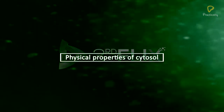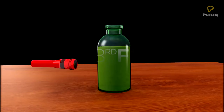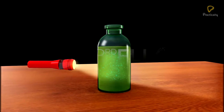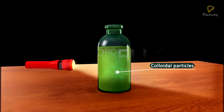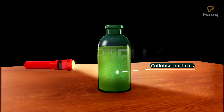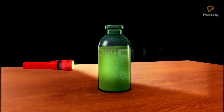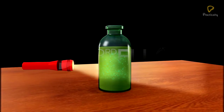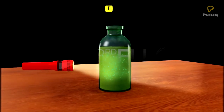Physical properties of cytosol. When a light beam is passed through the colloidal system of the matrix at right angles in a dark room, the small colloidal particles which remain in suspended structure reflect the light, so that the path of the light can be seen. This phenomenon is called the Tyndall effect.